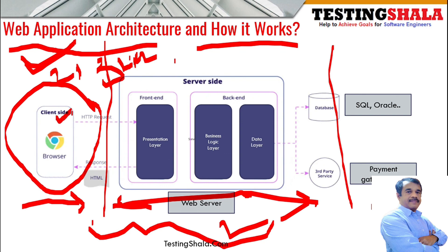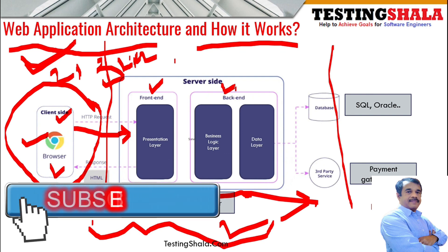On the client side, we access the web application using a browser. When you enter a URL — say gmail.com — an HTTP request goes to the server side. On the server side there are two components: a front-end component and a back-end component. When you enter gmail.com, you immediately get a page asking for a username and password — that is the presentation layer.